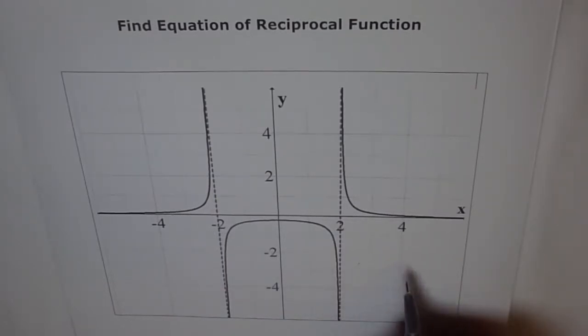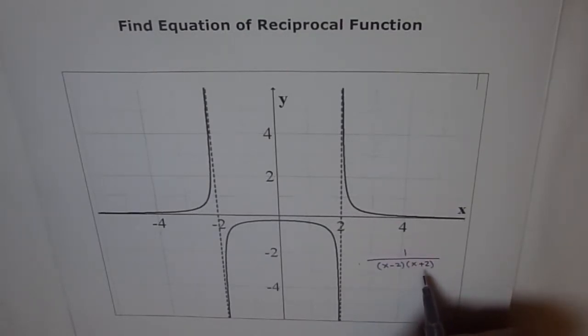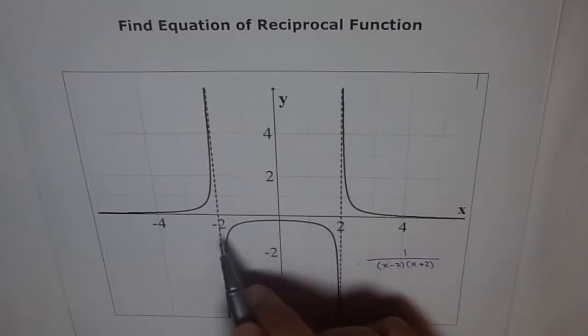Therefore, in the denominator, what should we have? We should have a factor of x minus 2 times x plus 2. 1 over, because it's a reciprocal function. Now, that satisfies our vertical asymptotes.